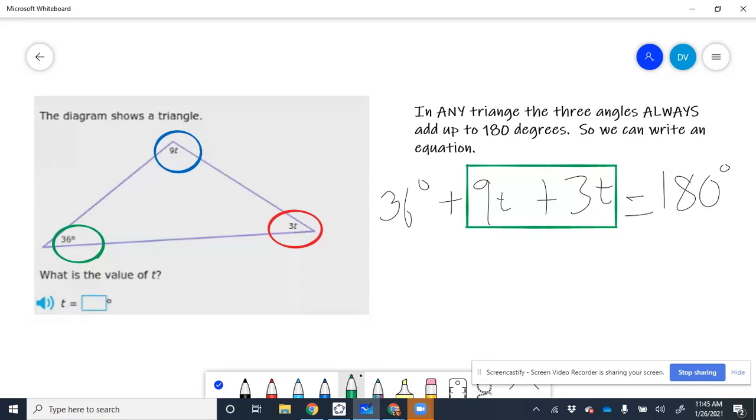When we add 9T plus 3T, we get 12T. I'm just going to write that down. 36 degrees plus 12T is equal to 180 degrees.